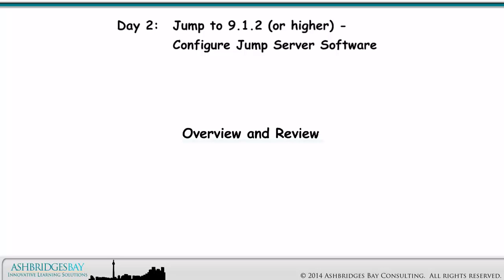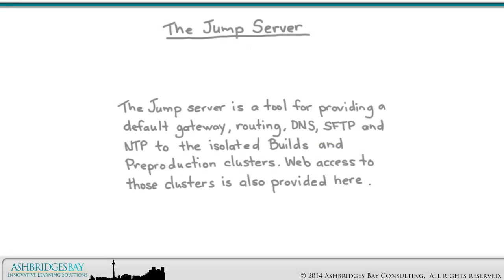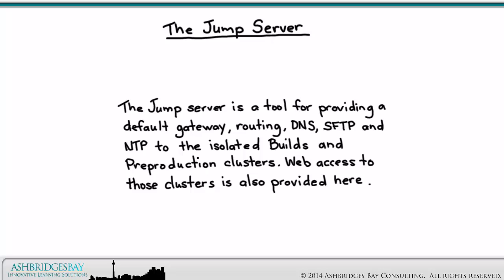Let's start with a quick overview and review. The Jump Server is a tool for providing a default gateway, routing, DNS, SFTP, and NTP to the isolated builds and pre-production clusters. Web access to those clusters is also provided here.